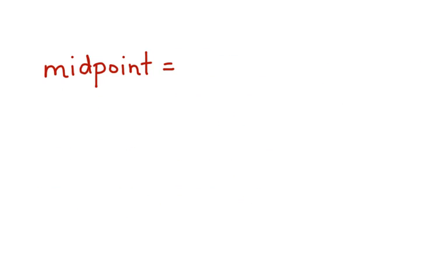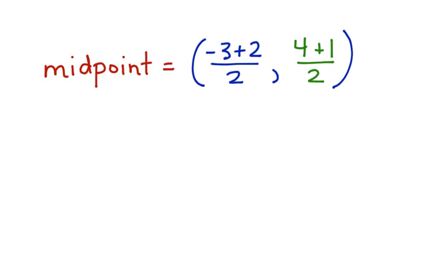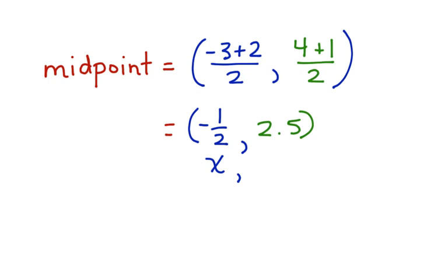The midpoint equals negative 3 plus 2 divided by 2, which will give us the x coordinate of the midpoint. And 4 plus 1 divided by 2 will give us the y coordinate of the midpoint. Negative 3 plus 2 is negative 1 half — that's our first coordinate. And 4 plus 1 divided by 2 is 2.5. Now we have the x coordinate and we have the y coordinate of the midpoint.